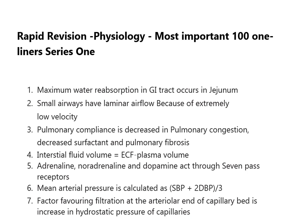Adrenaline, noradrenaline, and dopamine act through 7-pass receptors. Mean arterial pressure is calculated as systolic blood pressure plus 2 into diastolic blood pressure divided by 3. Factors favoring filtration at the arterial end of capillary is increase in hydrostatic pressure of the capillaries.